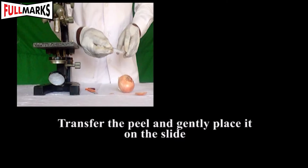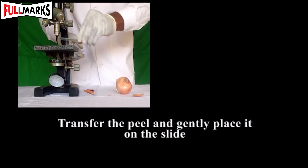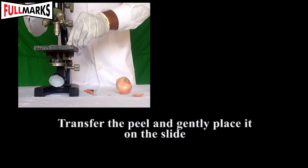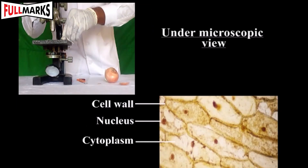Take a dry, clean cover slip and gently place it on the slide with the help of a needle such that no air bubbles enter into it. Place the slide under the lens of the microscope and record your observations.